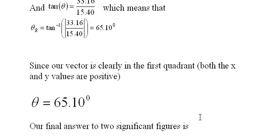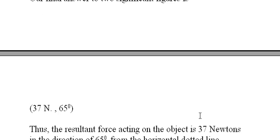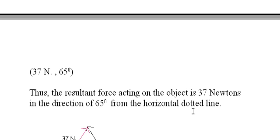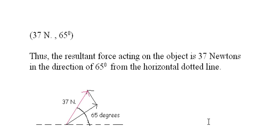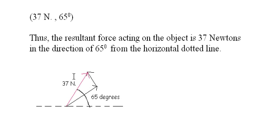Our final answer to two significant figures is 37 newtons, 65 degrees. Thus, the resultant force acting on the object is 37 newtons in the direction of 65 degrees from the horizontal dotted line.